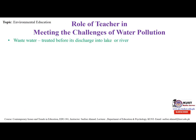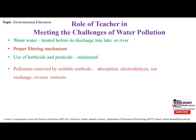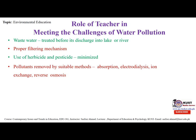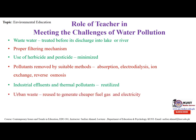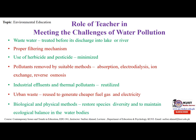The role of teachers in challenging water pollution: waste water should be treated before it is discharged into a lake or river. Proper filtration or filtering mechanisms should be in place. Use of herbicides and pesticides should be minimized. Pollutants should be removed by suitable methods like absorption, electro-dialysis, ion exchange, and reverse osmosis. Industrial effluents and thermal pollutants should be reutilized. Urban waste should be reused to generate cheaper fuel gas and electricity. Biological and physical methods should be used to restore species, dilute diversity, and maintain ecological balance in water bodies.